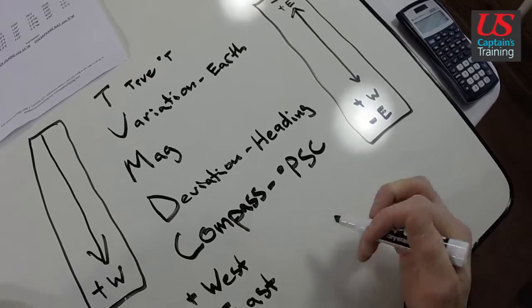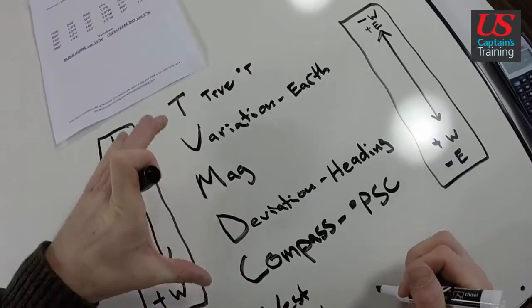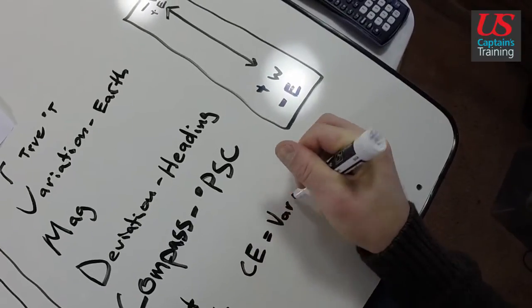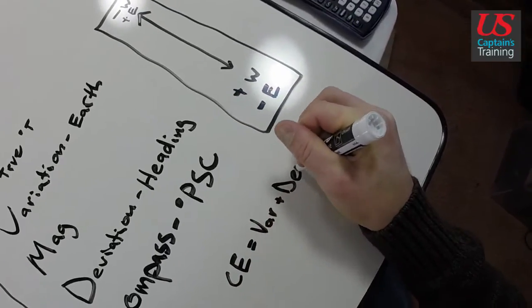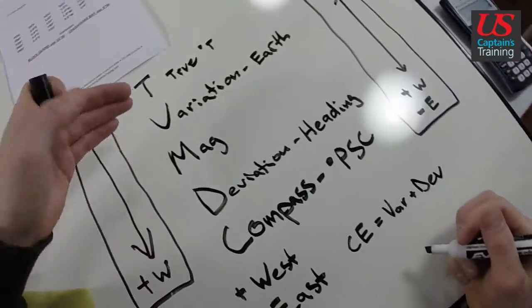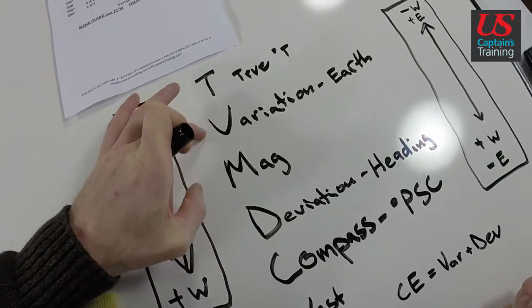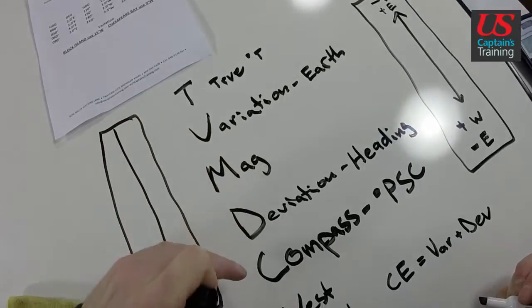And let's look at one other thing. Compass error. This is all about compass error. Compass error equals variation plus deviation. So, these two pieces, variation and deviation, create the compass error.